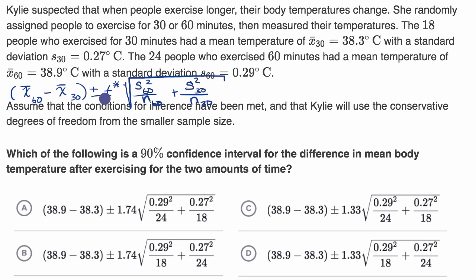And so we can actually figure out all of these things. So this is going to be equal to, the sample mean for the 60 minute group is 38.9, minus the sample mean for the 30 minute group, which is 38.3, plus or minus our critical T value.